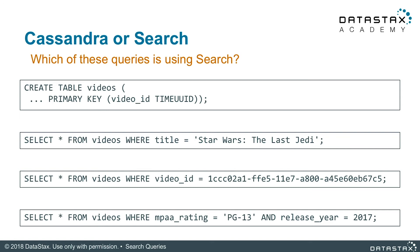The second query will execute with just DSC Core because it is only querying the partition key. Remember, the other queries wouldn't be able to run in DSC Core and will return a warning to use the allow filtering keyword. Also, even though there is a search index on the video_id column, because we are able to search with DSC Core on this column, we will. The logic states: if able to search via DSC Core, then do that; if not, try DSC Search.